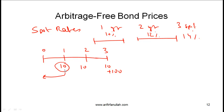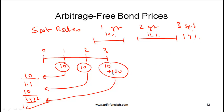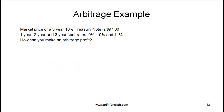Specifically: the $10 after one year is discounted at the one-year spot rate of 10%, giving 10 divided by 1.1. The $10 after two years is discounted at the two-year spot of 12%, giving 10 divided by 1.12 squared. The $110 after three years is discounted at the three-year spot of 14%, giving 110 divided by 1.14 cubed. Adding those three numbers together gives you the arbitrage-free bond price.